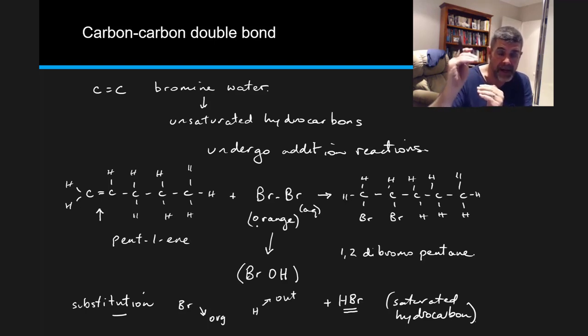And that color will migrate from the aqueous layer into the organic layer. And then once it's in that organic layer, if there is a double bond or a triple bond present, then the bromine is going to add across that bond spontaneously,